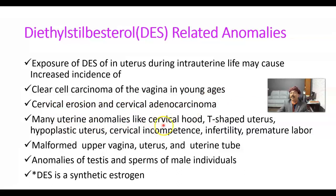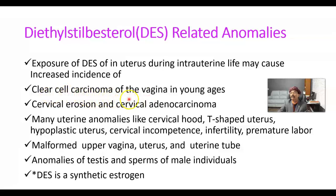Many uterine anomalies may be associated with DES exposure, including cervical hood, T-shaped uterus, hypoplastic uterus, cervical incompetence, infertility, and premature labor. Not all exposed individuals will develop clear cell carcinoma of the vagina, but it is found in approximately 1 in 1,000 individuals exposed to diethylstilbestrol — particularly female babies who at age 16 to 22 may develop clear cell carcinoma of the vagina.